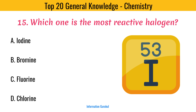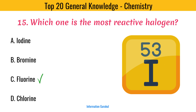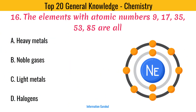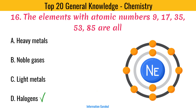Which one is the most reactive halogen? The elements with atomic numbers 9, 17, 35, 53, and 85 are all halogens.